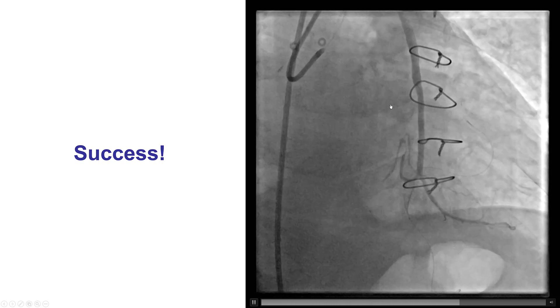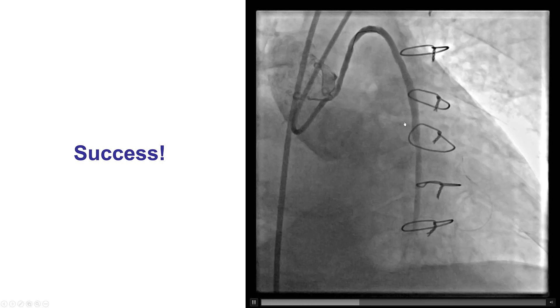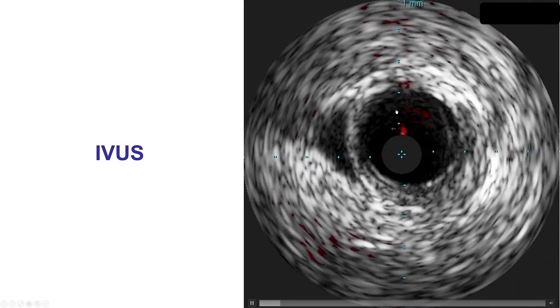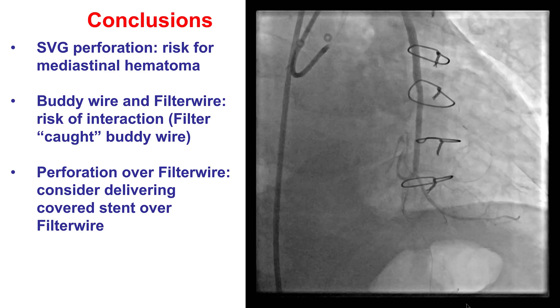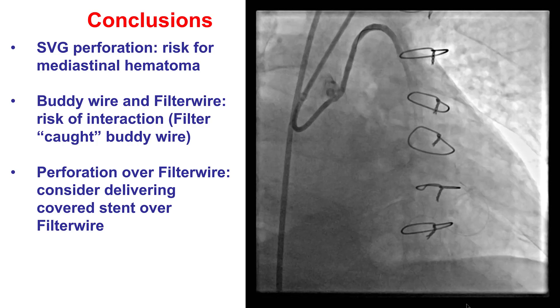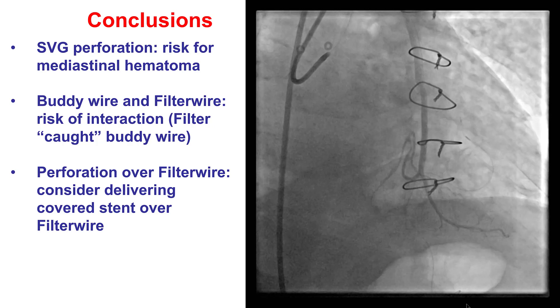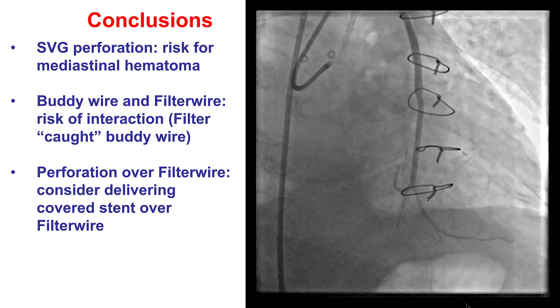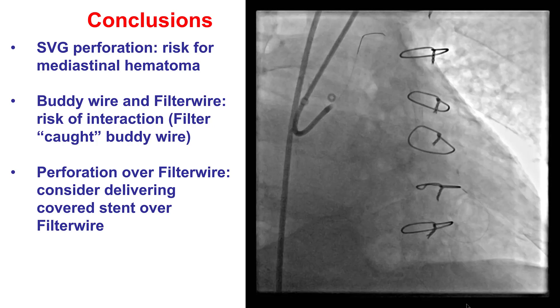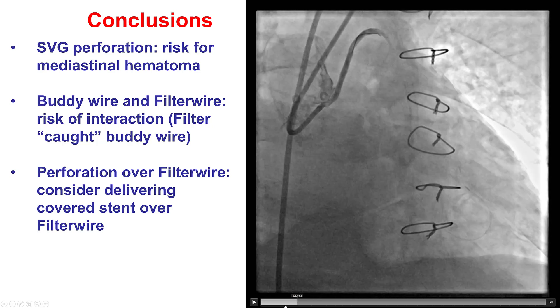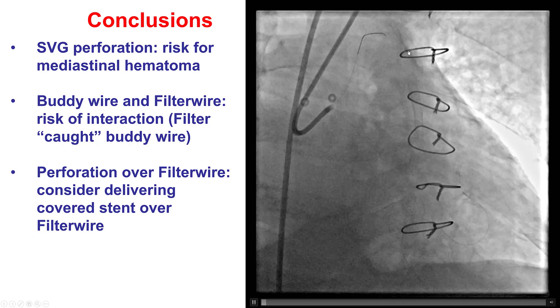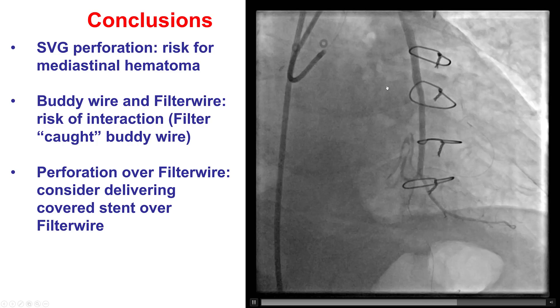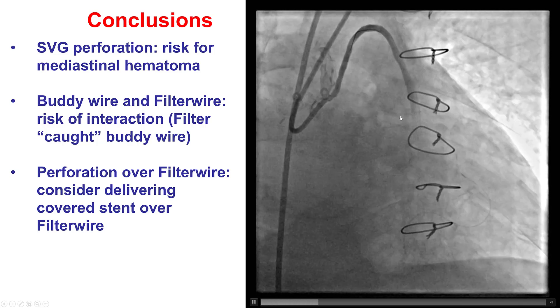IVUS showed a nice result with good stent expansion and stent strut apposition. Several lessons from this case: first, saphenous vein graft perforation can lead to mediastinal hematoma. Second, for vein grafts, it may be best to slightly undersize the stents to minimize the risk of perforation — retrospective studies show that the risk of restenosis is not necessarily higher with slightly undersized stents. What was unique here was that the perforation occurred over a filter wire, and when we tried to remove the filter wire, it caught the body wire from the second guide catheter. The lesson is to either deliver the covered stent over the filter wire without retrieval, or remove the body wire prior to retrieving the filter wire.